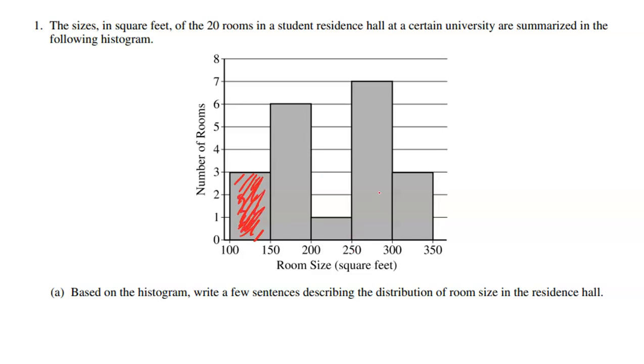Here's another example. This bin right here would be for any bedrooms that fell, or any rooms, from 250 to up to 300 square feet. So it'd be 250 to 299.99 square feet. And seven of the 20 rooms fell into that range. Okay, so now we understand how to read a histogram. It's pretty simple. Now let's answer the question.